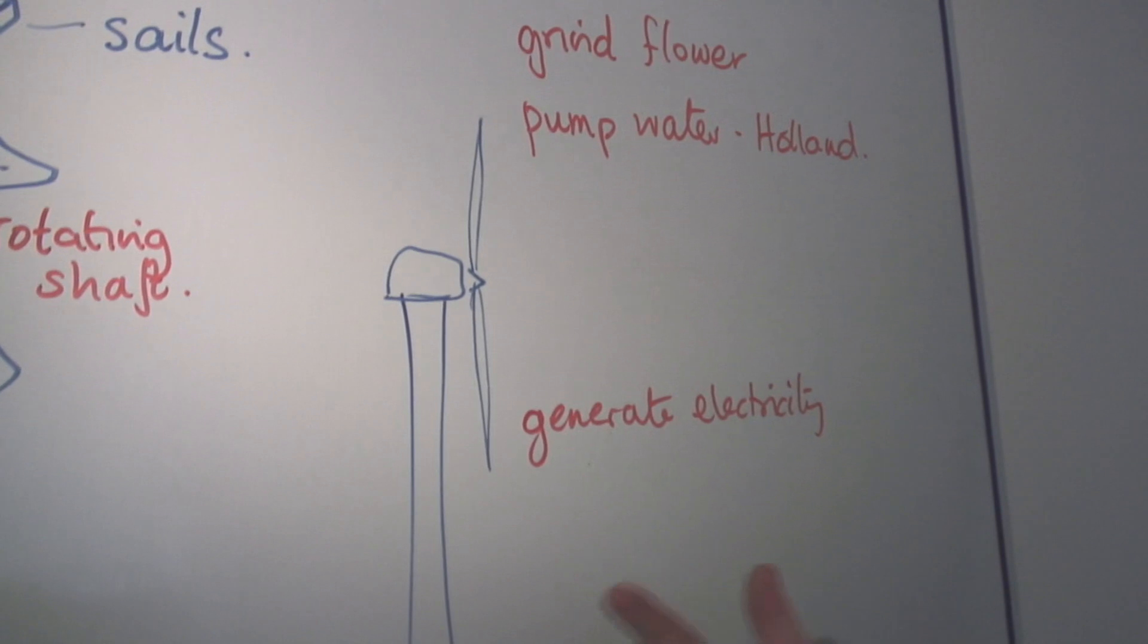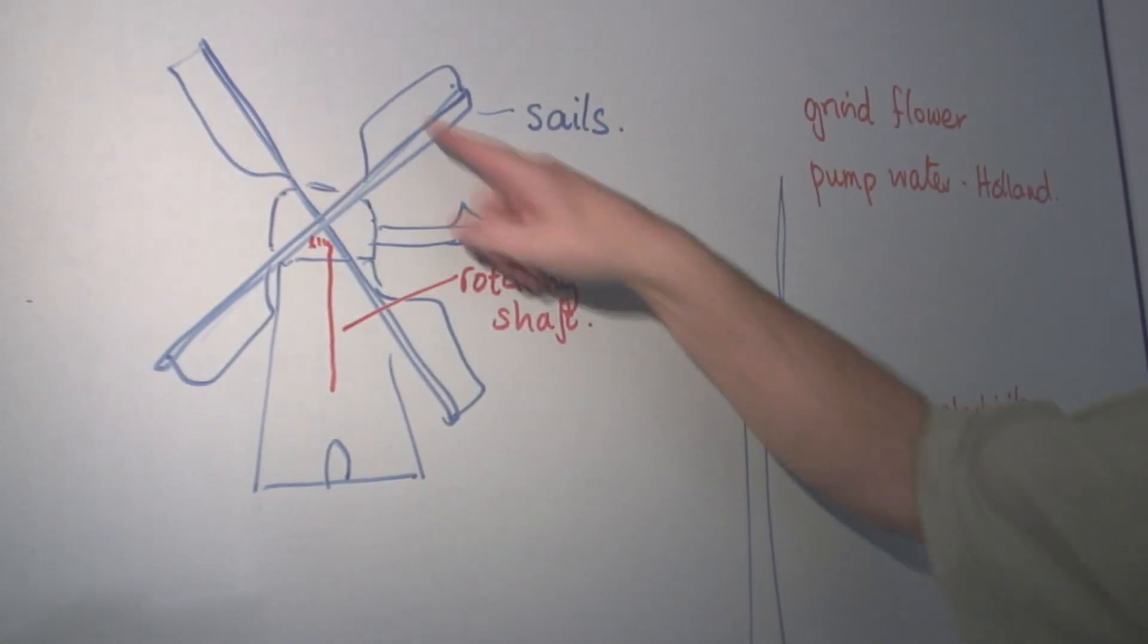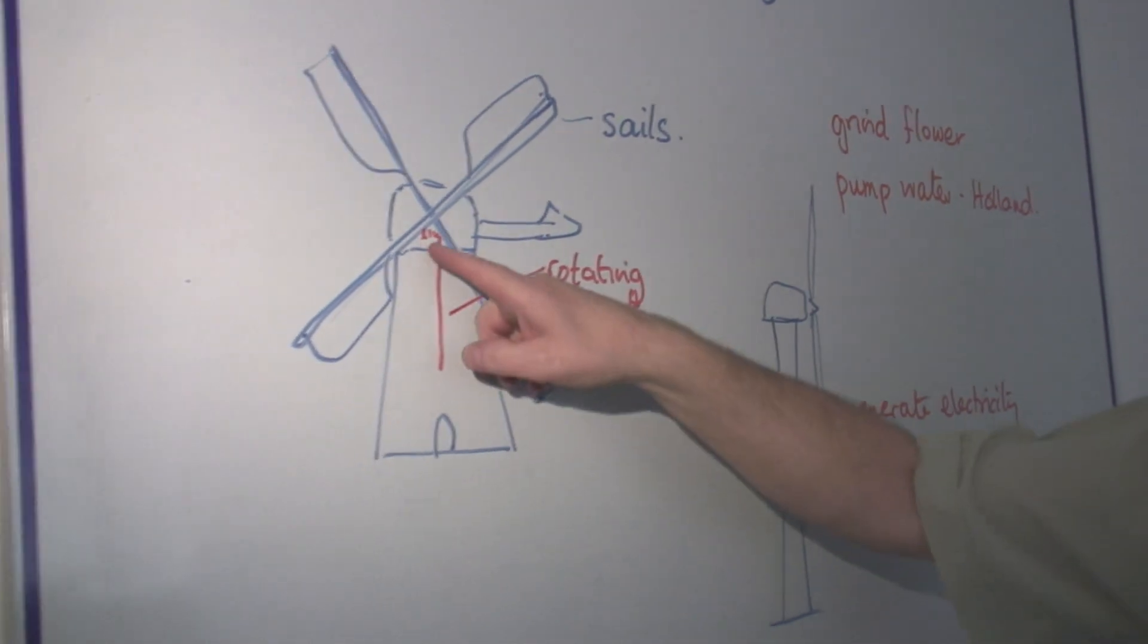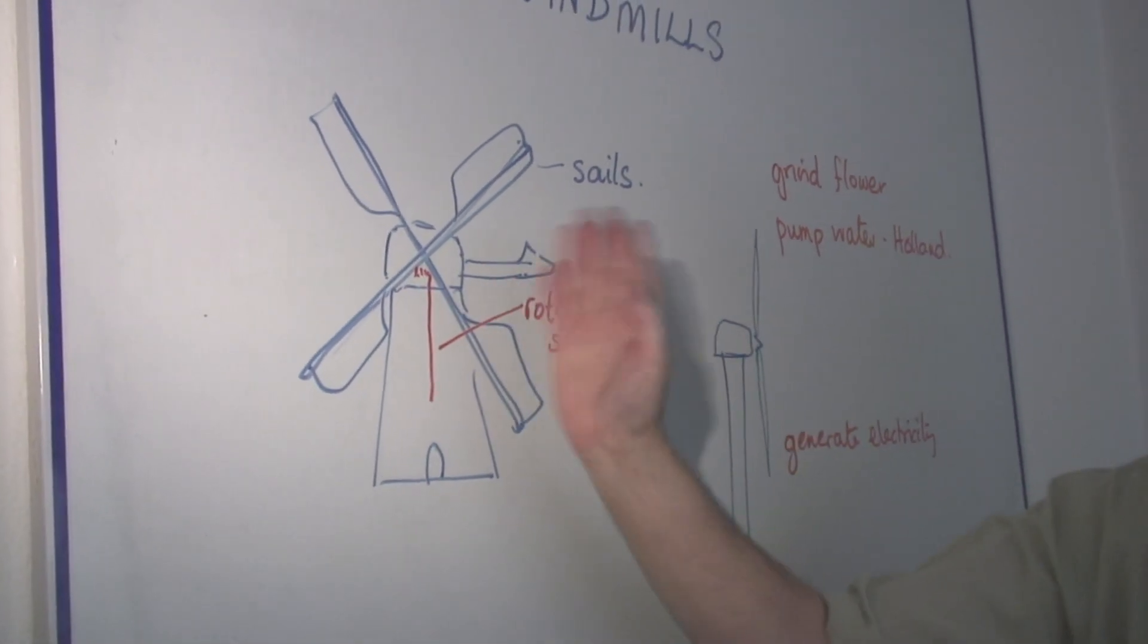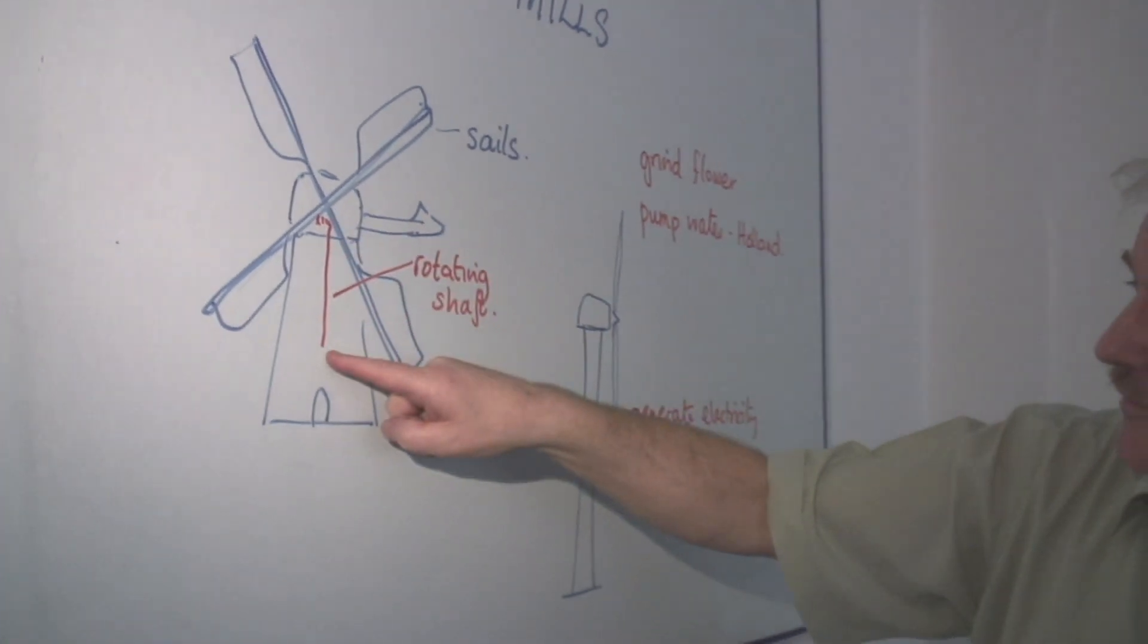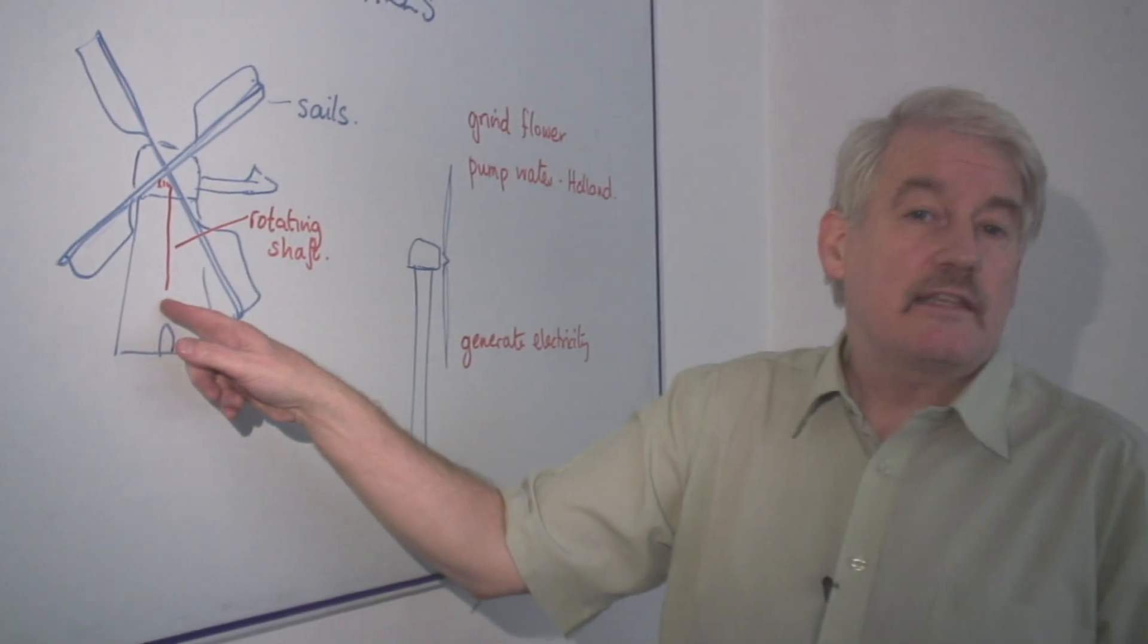Now inside what we've got is with the rotation of the sails which is quite slow, we have a gearing structure at the top to speed up the shaft. And here we have a shaft which goes down into the mill to do whatever the mill is designed to do.